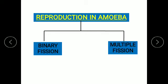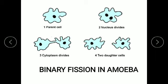Reproduction in amoeba takes place by two ways: binary fission and multiple fission. In binary fission, first the nucleus of the cell divides into two, and after that cytoplasm also divides. This gives rise to two daughter cells which are exact copies of their parent cell.